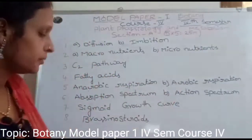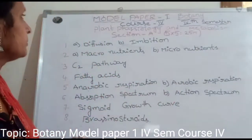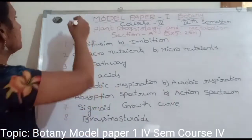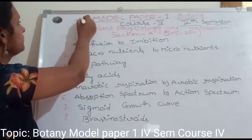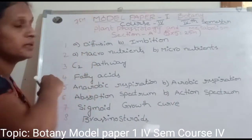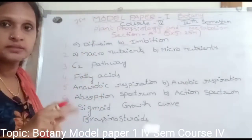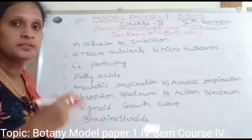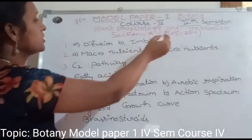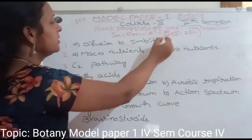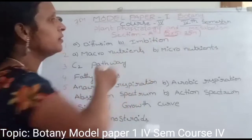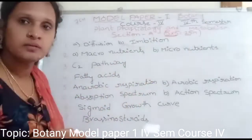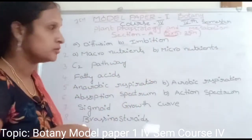The total marks are 75 marks. We will discuss Section A and Section B. In Section A, we will discuss short questions. Each question has 5 marks, totaling 25 marks.